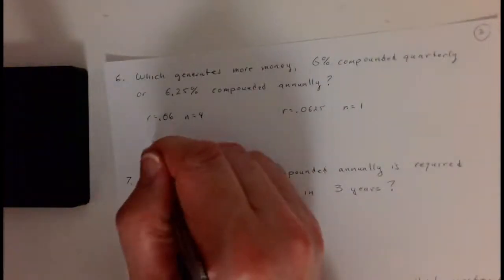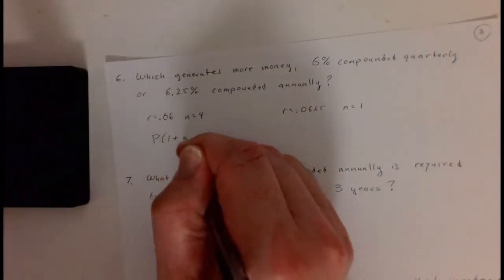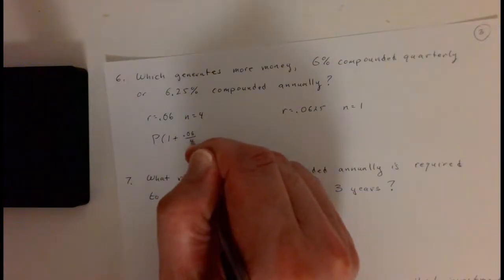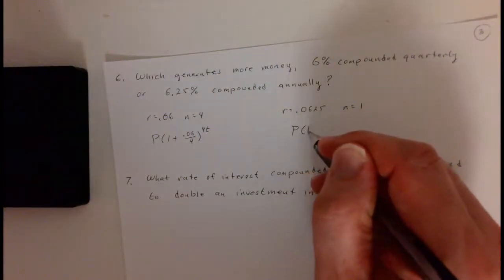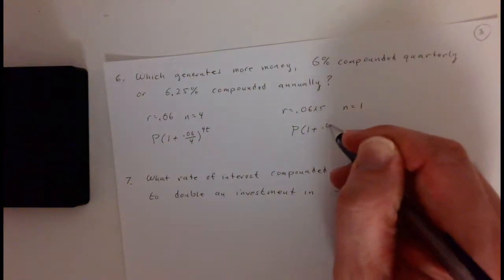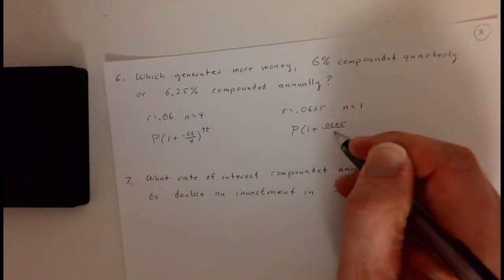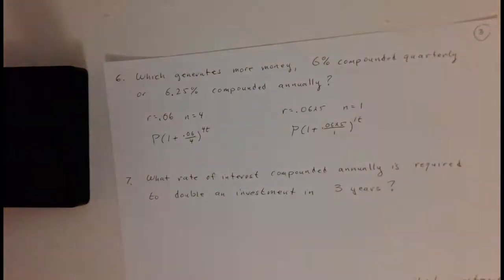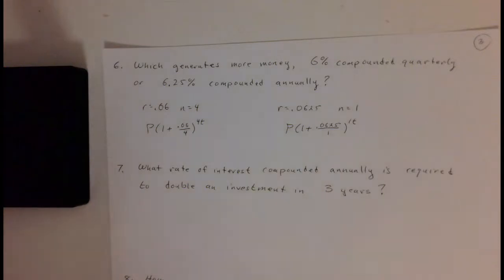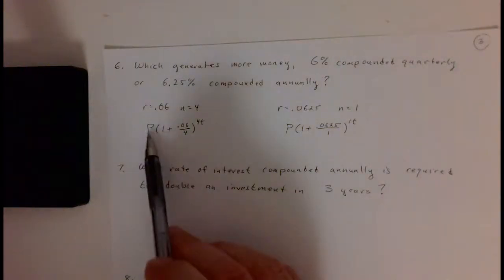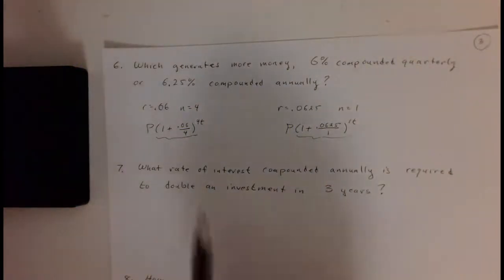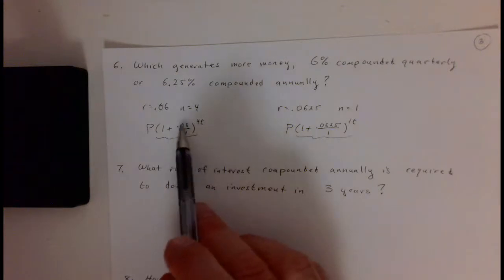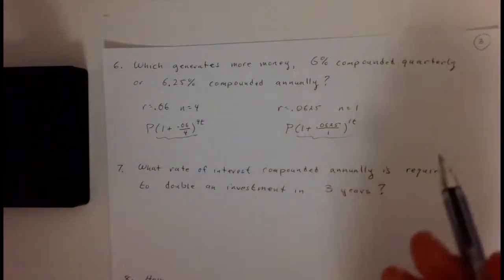If we write out our formula, the first scenario is P times one plus point zero six over four, raised to the four T. The second scenario is P times one plus point zero six two five divided by one, raised to one times T. You can see it doesn't matter what P is — if both P's are the same, it's really a matter of which base number is bigger.